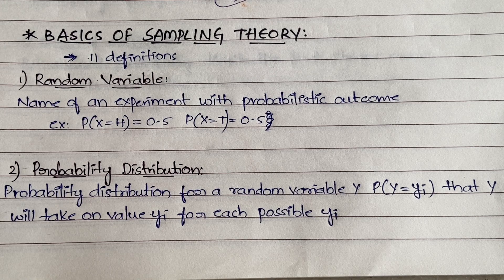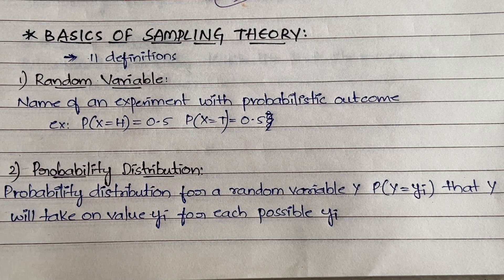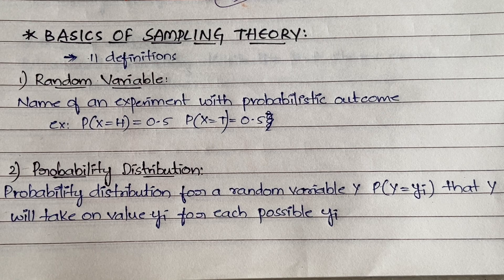In this video you're going to learn terminologies so that later you should not get confused about what a random variable is, what an estimator is, what estimator bias is, and what the central limit theorem is. We are going to learn a total of 11 definitions related to sampling and statistics in machine learning.